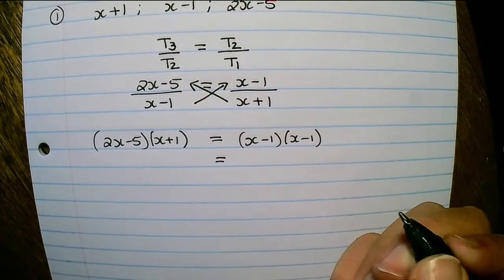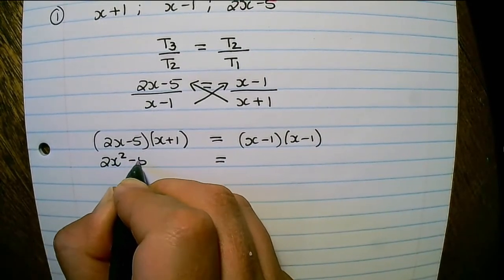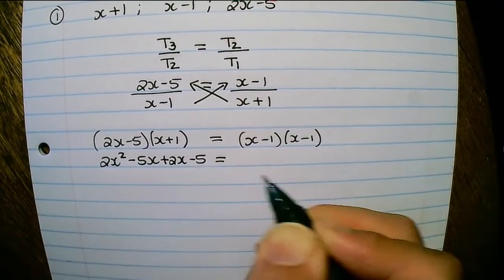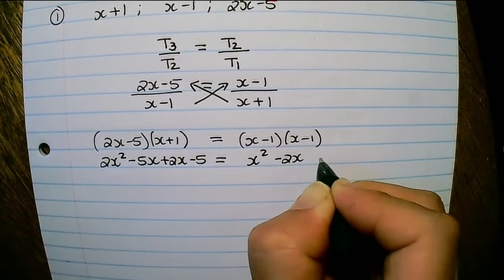So if I multiply out I have 2x squared minus 5x plus 2x minus 5 is equals to x squared minus 2x plus 1.